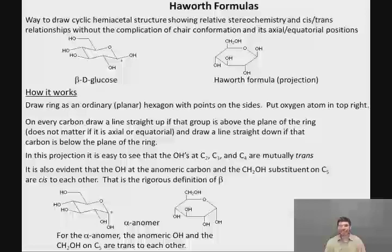In this case, for the alpha anomer, the anomeric carbon and the CH2OH on C5 are trans to each other.